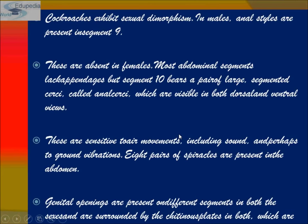Cockroaches exhibit sexual dimorphism. In males, anal styles are present in segment 9 but are absent in females. Most abdominal segments lack appendages. Segment 10 bears a pair of large segmented cerci, also called anal cerci, visible in both dorsal and ventral views. These are sensitive to air movements, including sound and perhaps ground vibrations.